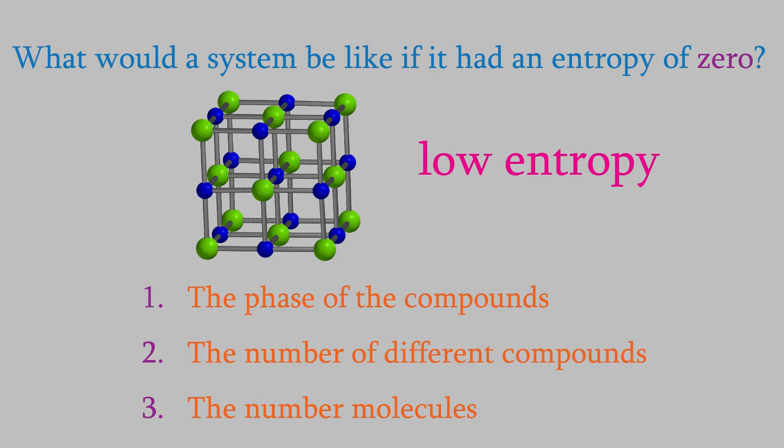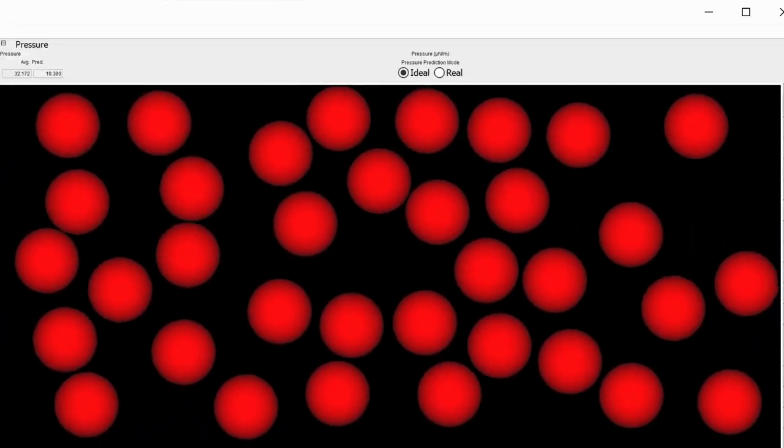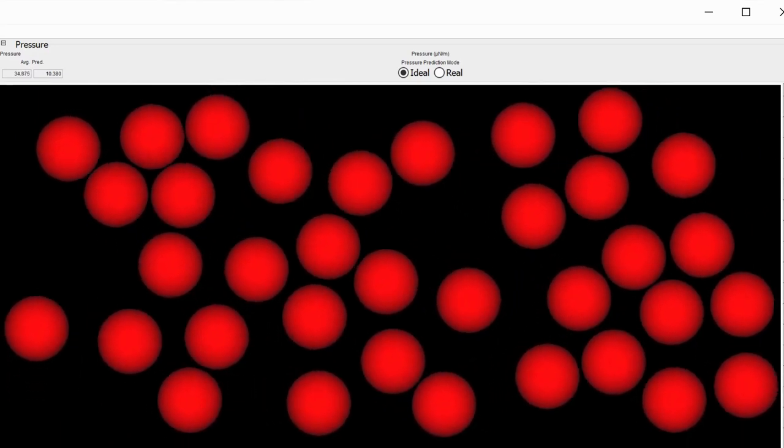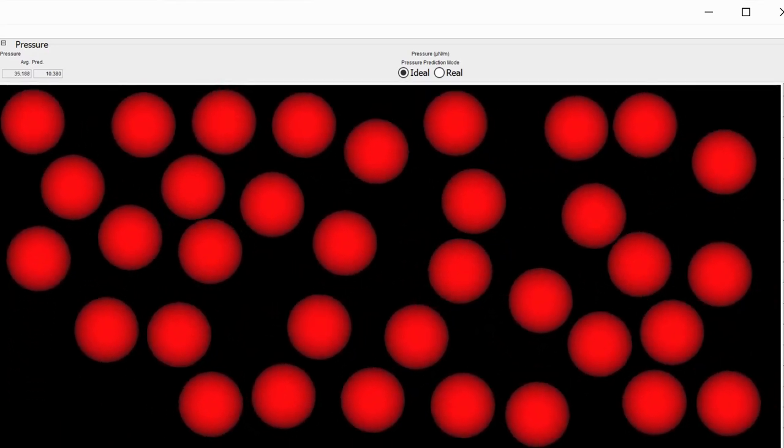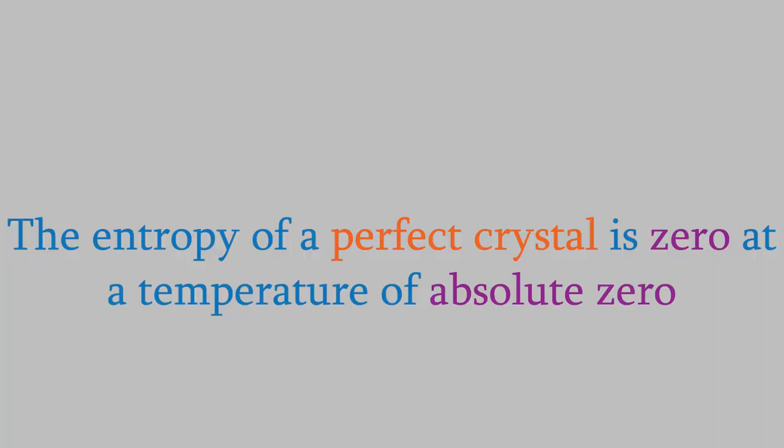From the work you did with gas laws in General Chemistry 1, you might remember that molecules move more slowly at lower temperatures. So if we want to make them stand still, we need to lower the temperature all the way down to absolute zero. When that happens, we'll have what's called a perfect crystal, and the entropy will be zero because the atoms in the crystal will not be moving.